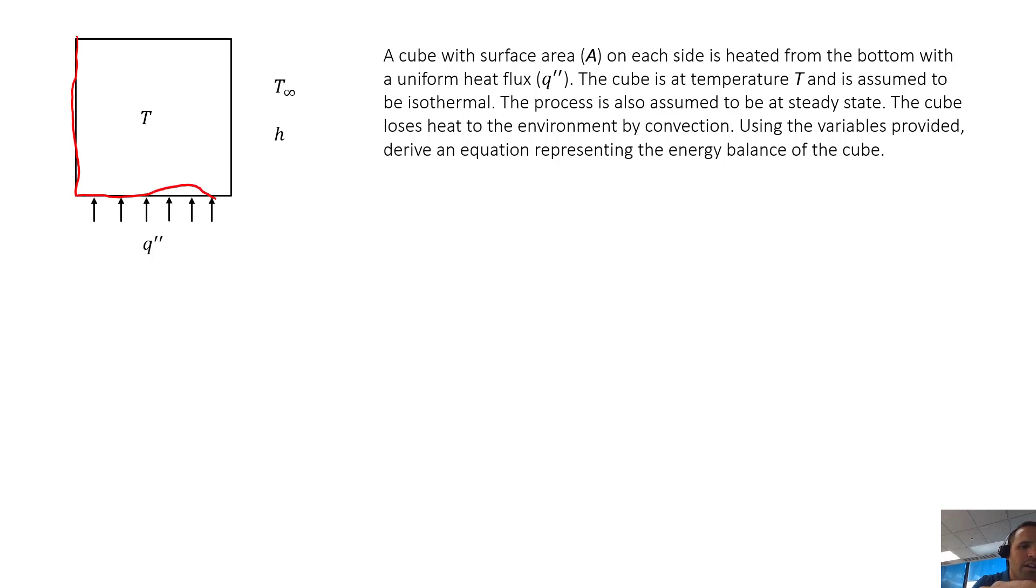Energy is getting in from this source—it could be like a stovetop or something—and energy is getting out, crossing that system boundary and leaving by convection. So we have this convective term going out.